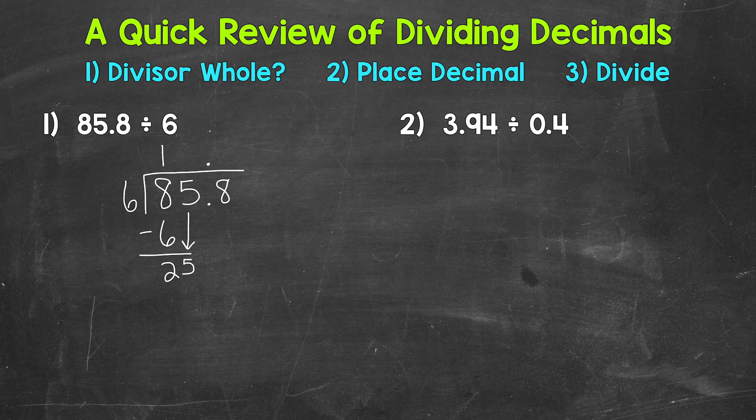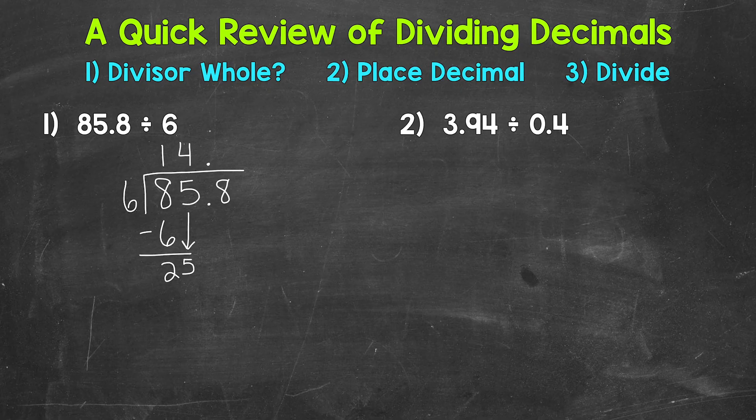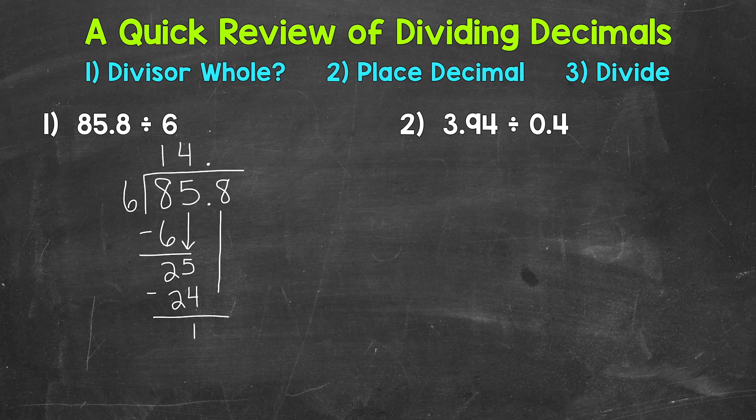Now we repeat. So divide, 25 divided by 6. How many whole groups of 6 in 25? Well 4. Multiply, 4 times 6 is 24, subtract, we get 1, and then bring down our 8.